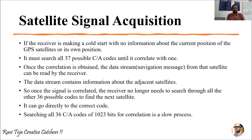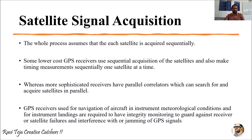Searching all 36 or 37 C/A codes out of 1023 bits for correlation will be a slow process. If the signal is not properly obtained, searching through all 36 or 37 codes to achieve correlation is considered a slow process.